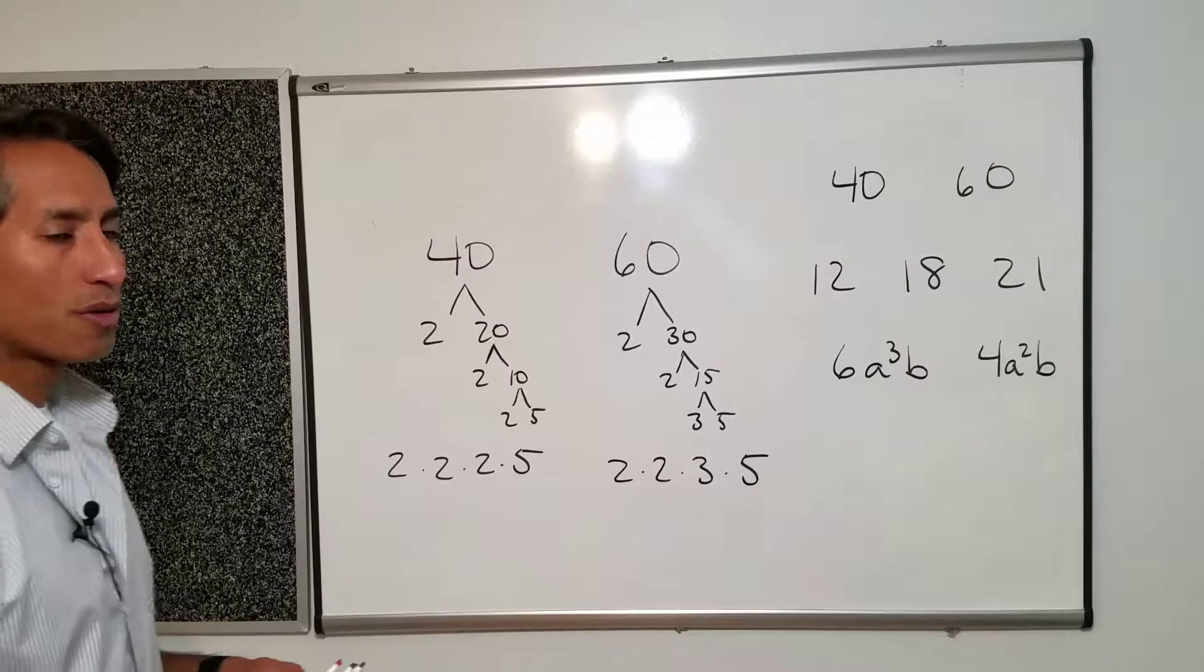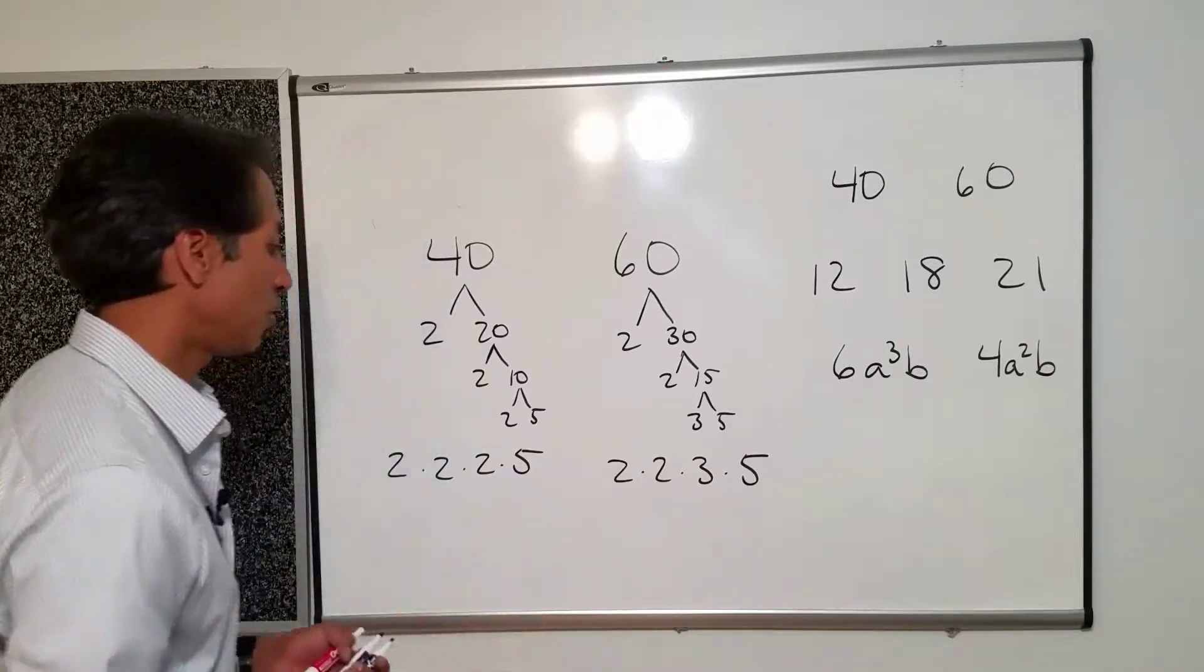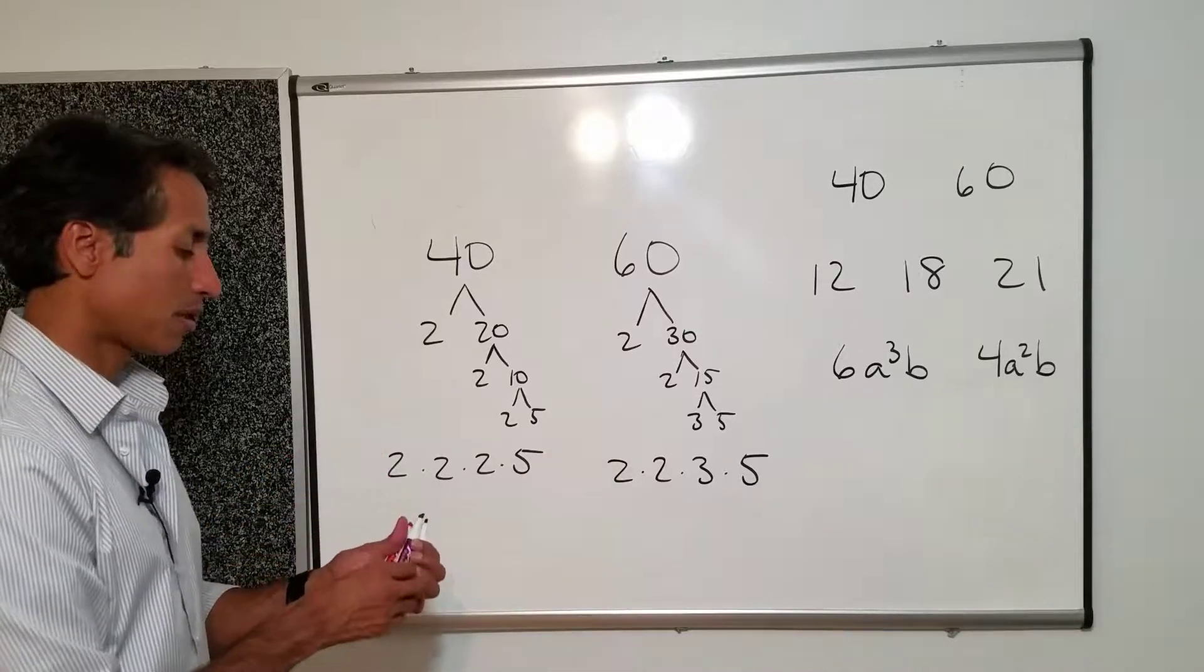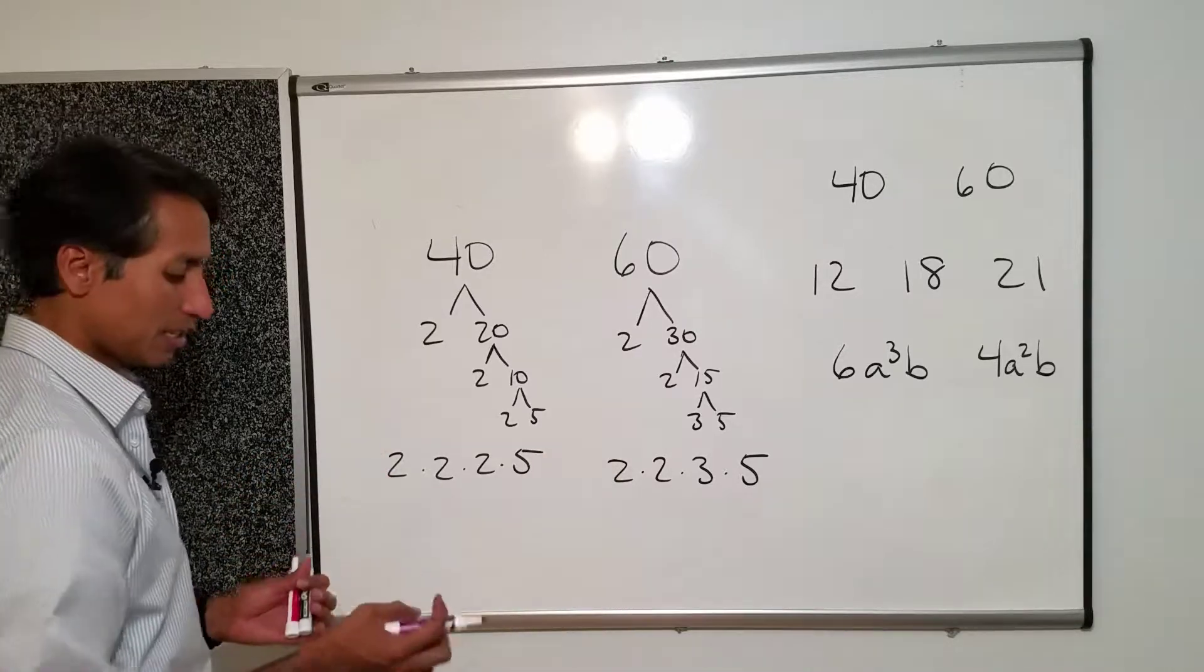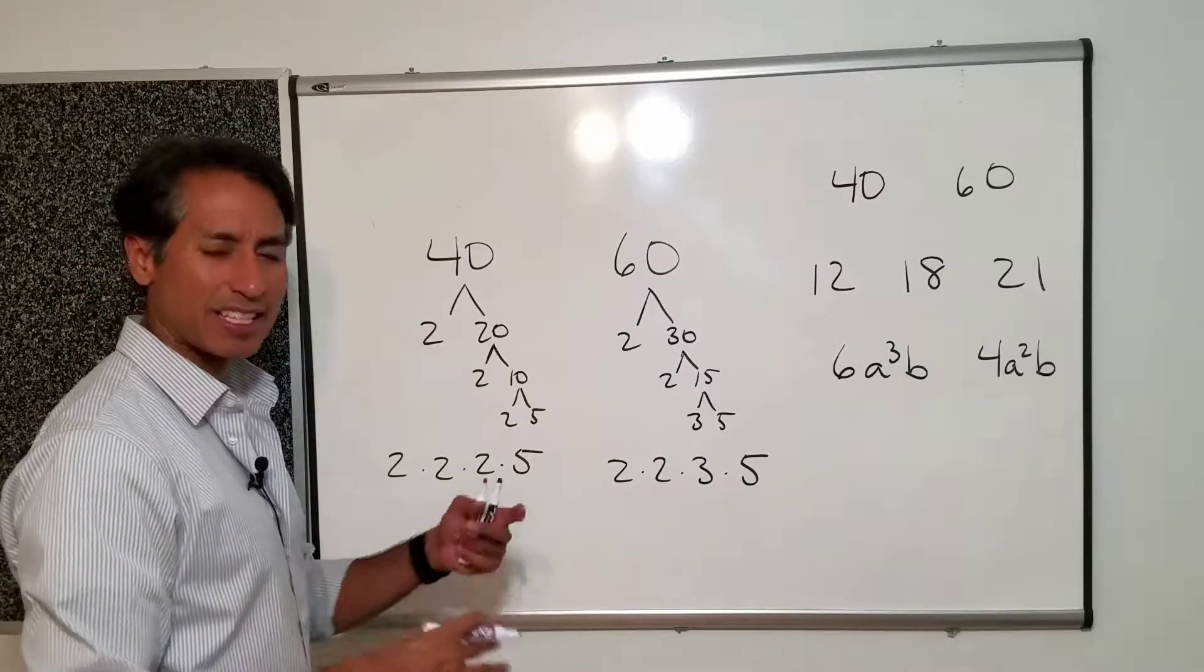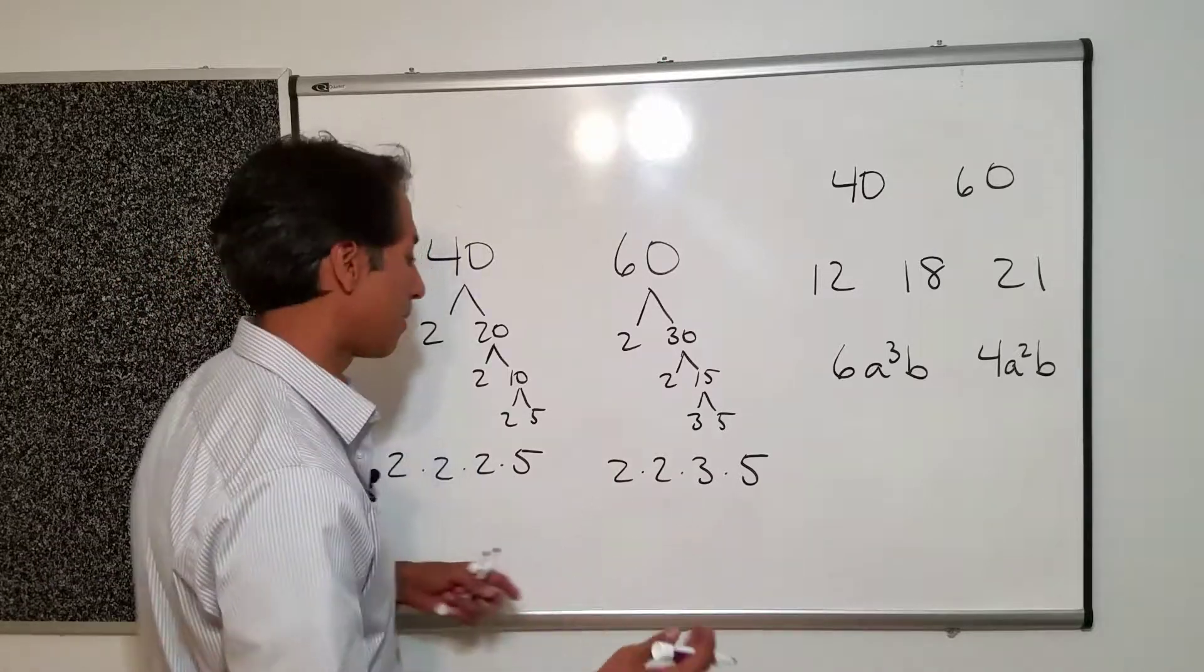Now in order to find the greatest common factor what we need to do is pull out something where we have an equal amount in both. And what I mean by that is we need to pull out equals. The way I like to do it is I like to visually draw this with students so that they see the connection between the two numbers.